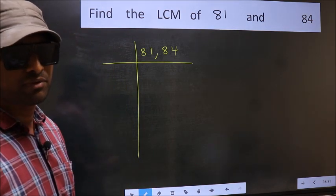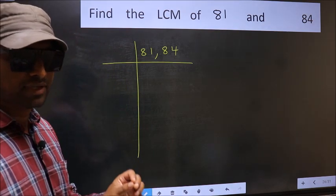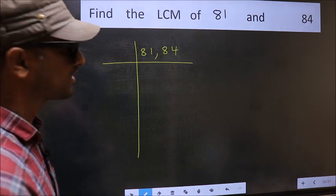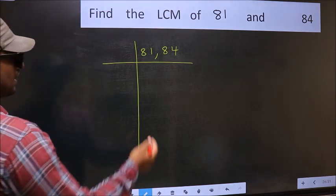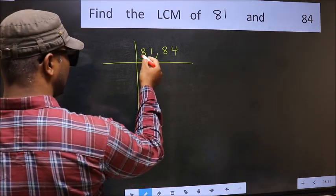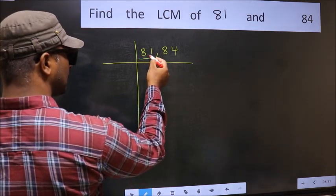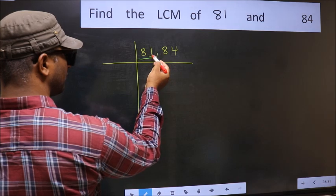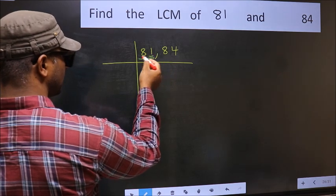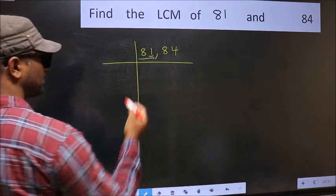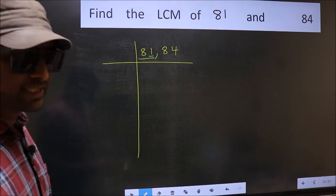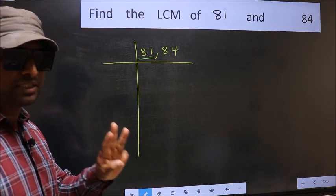Now you should focus on the first number, which is 81 here. In this number, the last digit is 1 — not even. So this is not divisible by 2. Next, try prime number 3.